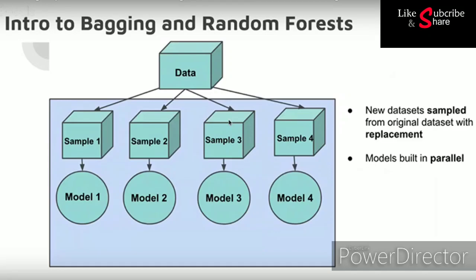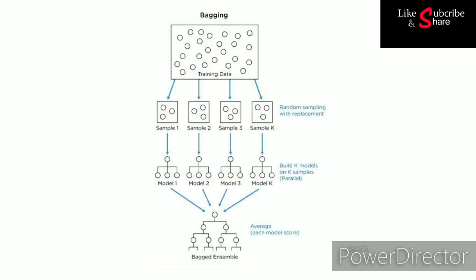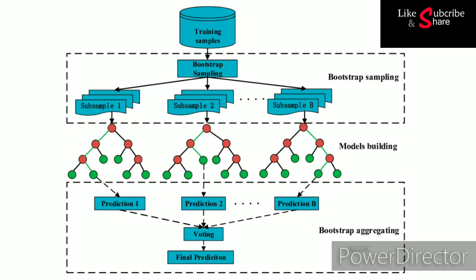Let's say we have a binary classification with class 1 and class 2. Suppose 20 same base classifiers — say 20 decision trees — are trained on the training dataset with different variations of the training data. While testing, if a certain observation is classified as class 1 by 15 models and the rest 5 classify it as class 2, then the observation will be classified as class 1, because the majority of the models have classified it as class 1.